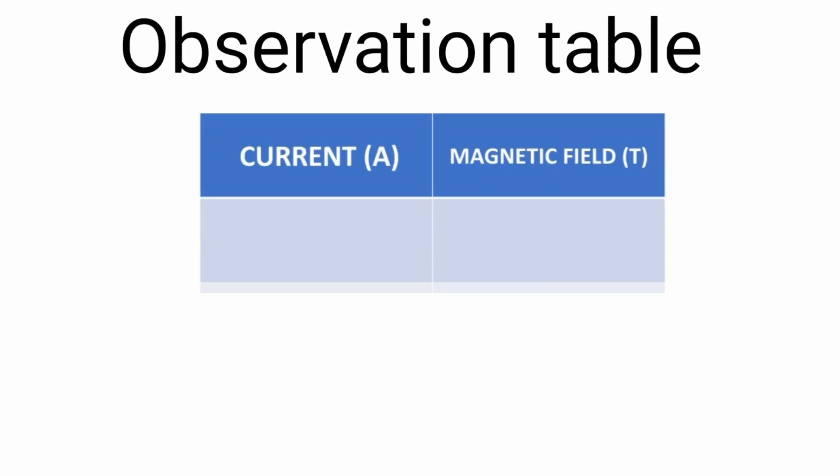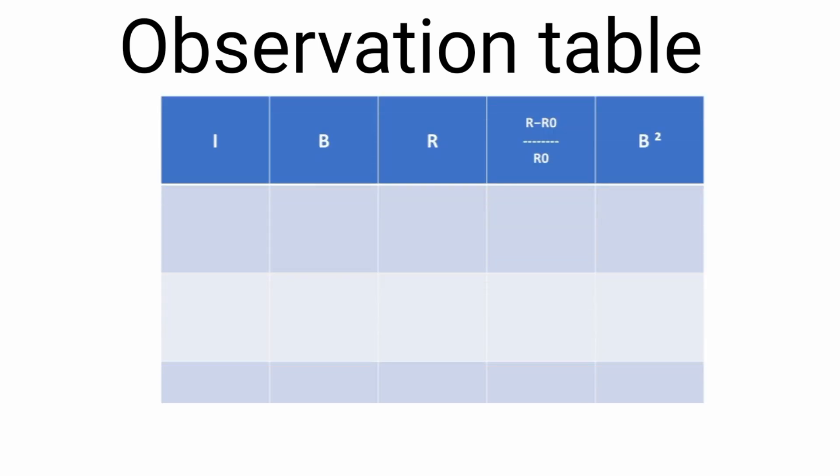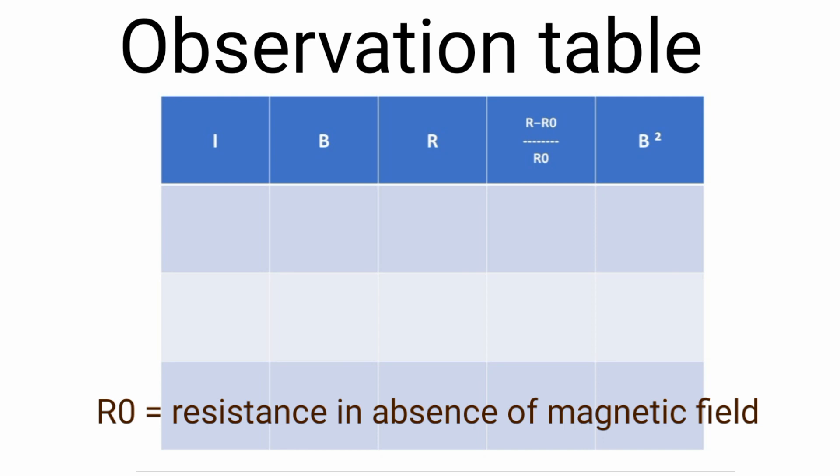Then you will have the observation table for the calibration part, that is current and the magnetic field, and the second table will be where you have measured the resistance value. Here R0 is the resistance without magnetic field.